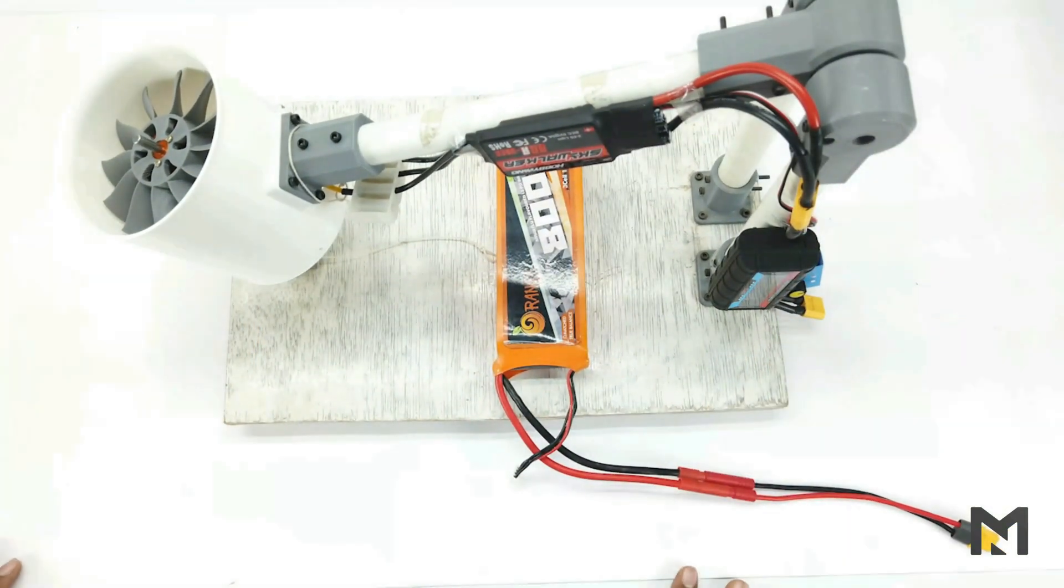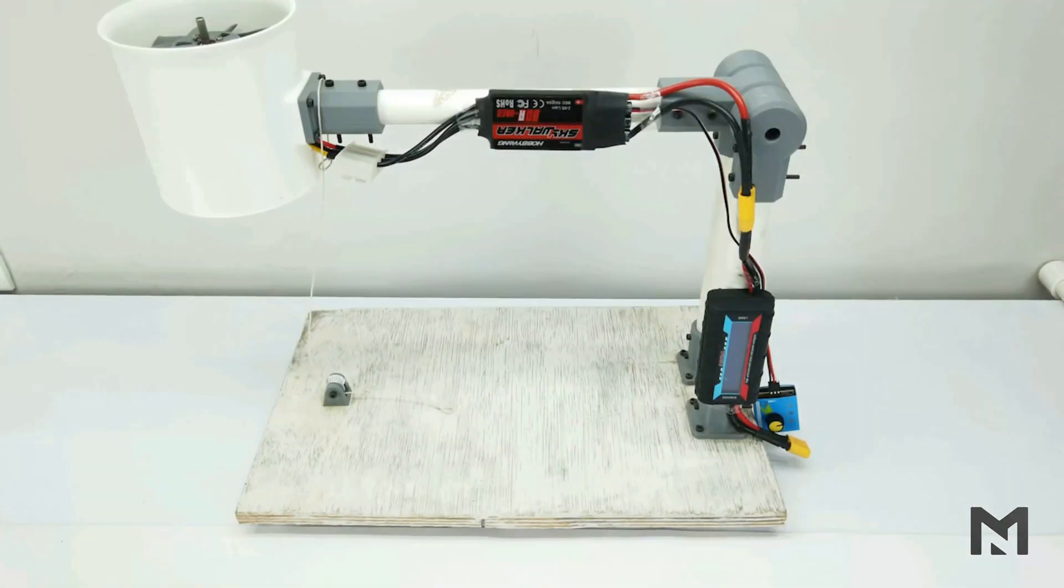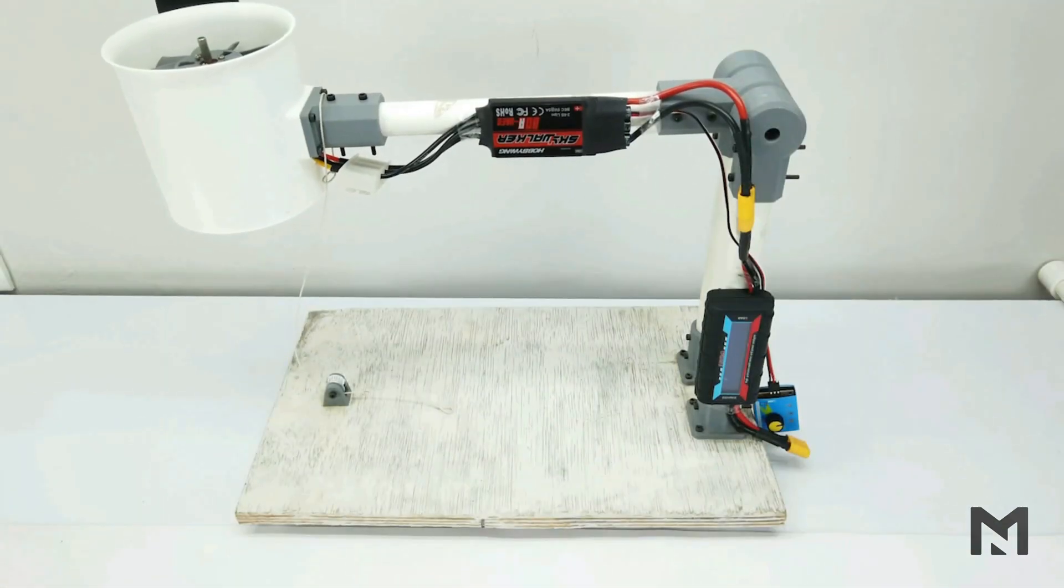Now the EDF is ready for test. So first I will use the spring balance to check the ideal thrust. And the ideal thrust is about 255 grams.